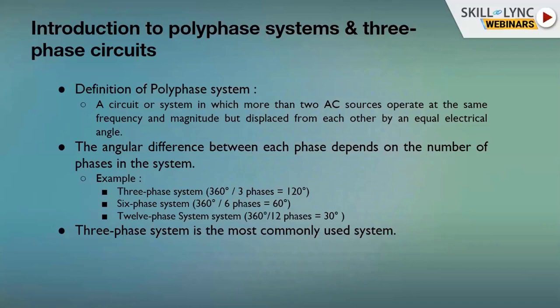For a six-phase system, the displacement would be 360° ÷ 6 = 60°, and for a twelve-phase system it would be 30°. Even though six-phase and twelve-phase systems exist, people have adopted the three-phase system most commonly — it is the most widely used system.